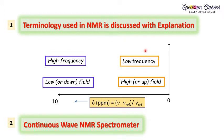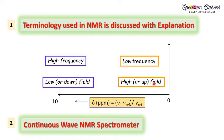As we all know, there are two different types of terminologies used. One is in terms of frequency — low frequency and high frequency — and the other is in field terms: high field, also known as upfield shift, and low field or downfield. If you are a beginner and have any confusion about why low frequency is termed as high field or upfield, then this video is very important for you.